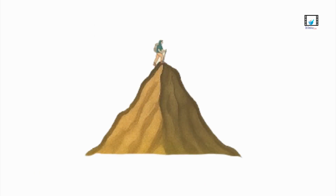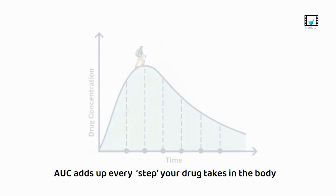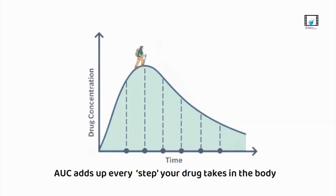Think of AUC like hiking. Each step you take adds to your progress. AUC adds up every step your drug takes in the body. It's not just about how high you go, but how long you stay on the path. That's the real measure of drug exposure.